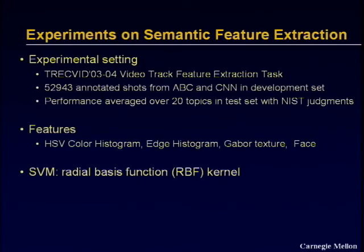Now I'll give some hard evidence that this is a good idea. We tried this over about 70 hours of video, subsampled to 52,943 annotated shots. There were 20 semantic categories labeled on this, including things like ships, airplanes, and outdoors. We're averaging performance over the 20 topics. The features used were HSV color histograms, edge histograms, Gabor features, and faces. Face information includes the size of the face, the location, how many faces there were, and the confidence in the faces. We used a support vector machine with an RBF kernel as our core classifier.